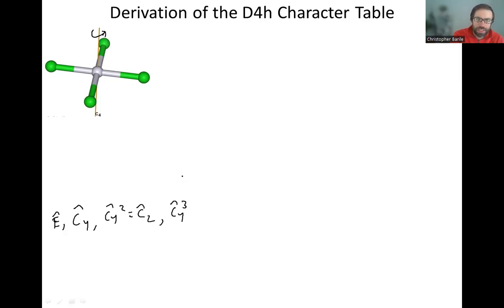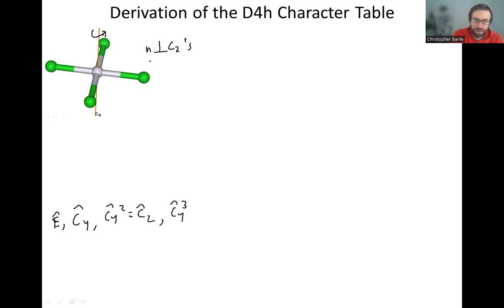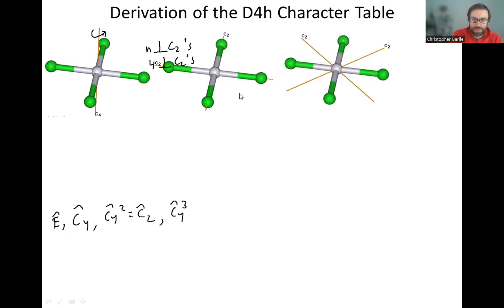In addition to that, we have perpendicular C2s. We're a D point group, so this means we always have n perpendicular C2s. We're a D4 group, so n equals four — we're going to have four perpendicular C2s. Two of those C2s are going to look like this, and two of the C2s are going to look like this.